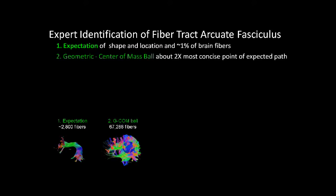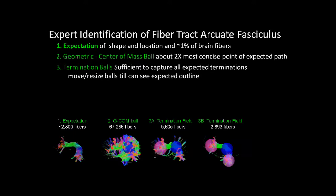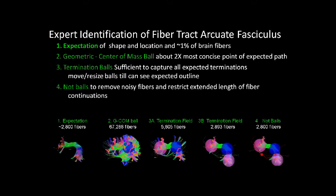Then identify the center of mass of where we expect that fiber path to go through, and create a ball that's 2 times the size of the expected fiber path so that we'll be sure to reach it. Then typically identify termination balls where you expect these fibers to pop out and end within that process. You tell the system to do an AND of those operations. We started from 300,000 fibers. Then with the first ball, we went to 67,000. The first termination ball to 5,000. After the second termination ball, we're down to 2,893 fibers. Our expert would also identify some NOT balls, as illustrated by the red ball here, and that would exclude those fibers from the set where they don't match the known physiology.